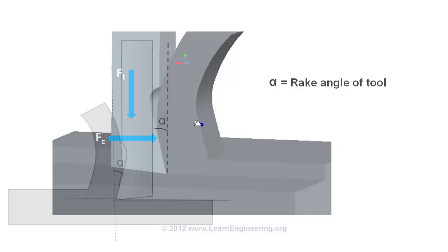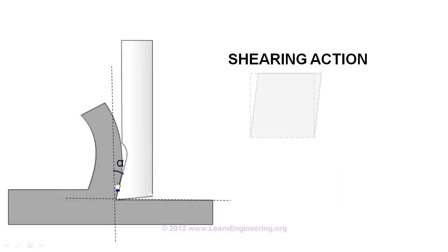If you take a close look at the cutting operation, it will be evident that material is getting removed from the workpiece by shearing action, where different layers of atoms slip one another to form chip. This is why there is a change in chip thickness from uncut to cut chip.